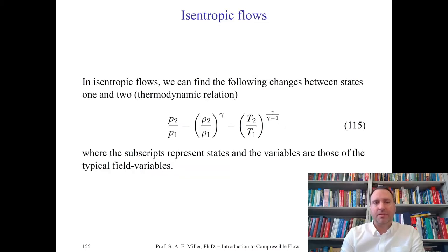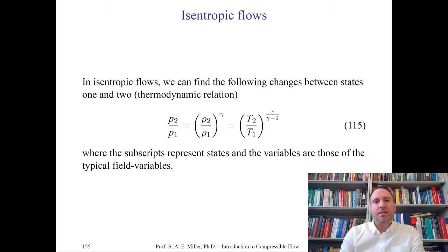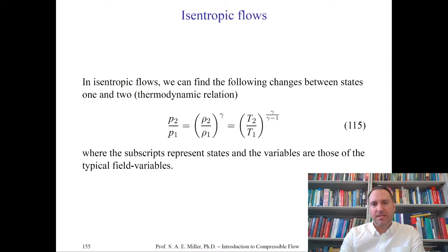In isentropic flows, there's no heat transfer or entropy gain, particularly along streamlines. Any flow region with no heat transfer and no entropy rise can be viewed as isentropic on particular streamlines. Using these thermodynamic relations, we can find state changes between two positions. For example, P2 over P1 goes as density 2 over density 1 to the gamma power, which equals temperature 2 over temperature 1 to the gamma over gamma minus one. Here gamma is the ratio of specific heats — for air, gamma equals 1.4.